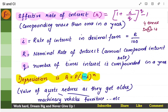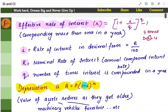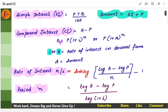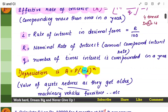What is depreciation? Certain assets like machinery, vehicles, furniture — their price reduces as they get older. The formula for depreciation is: amount equals principal into 1 minus i to the power n. Remember the sign change — when calculating amount in compound interest it's plus, but in depreciation it becomes minus because the amount is reducing as it gets older.